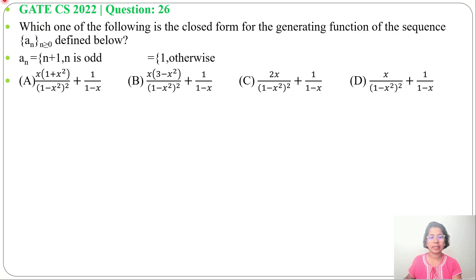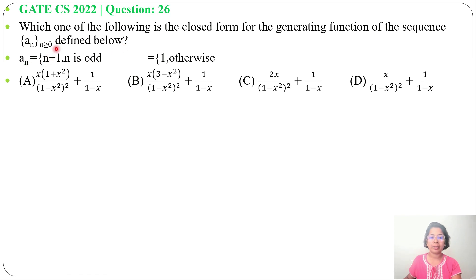Let's solve one previous question of set theory. This question was asked in GATE year 2022, question number 26. Which one of the following is the closed form for the generating function of the sequence a_n (n ≥ 0) defined below: a_n equals n+1 if n is odd, and 1 otherwise. Four options are given.